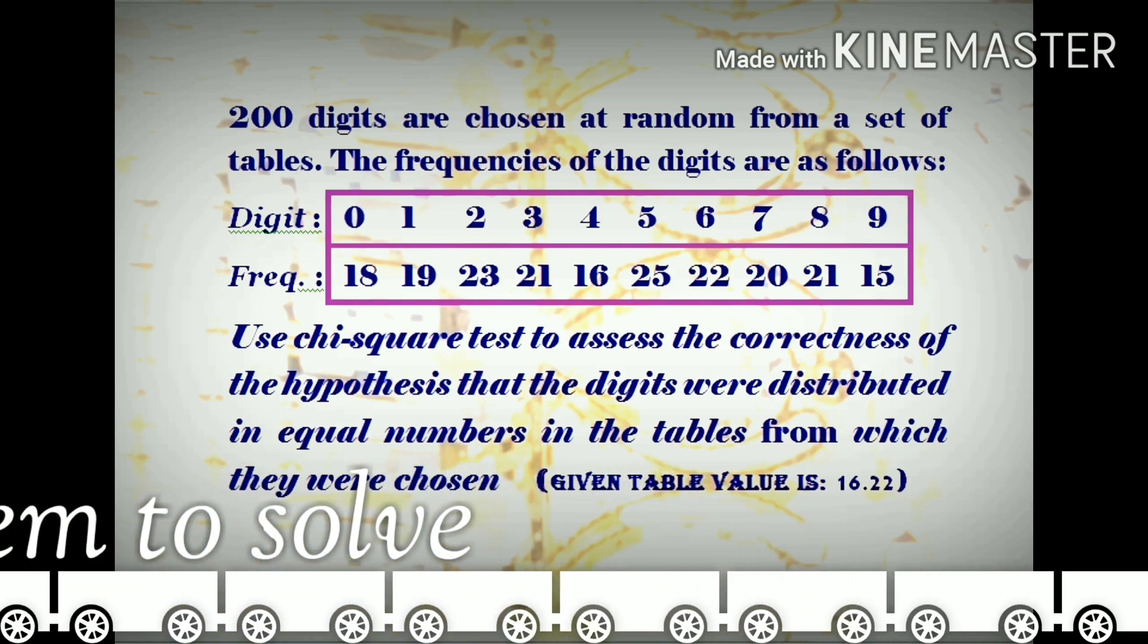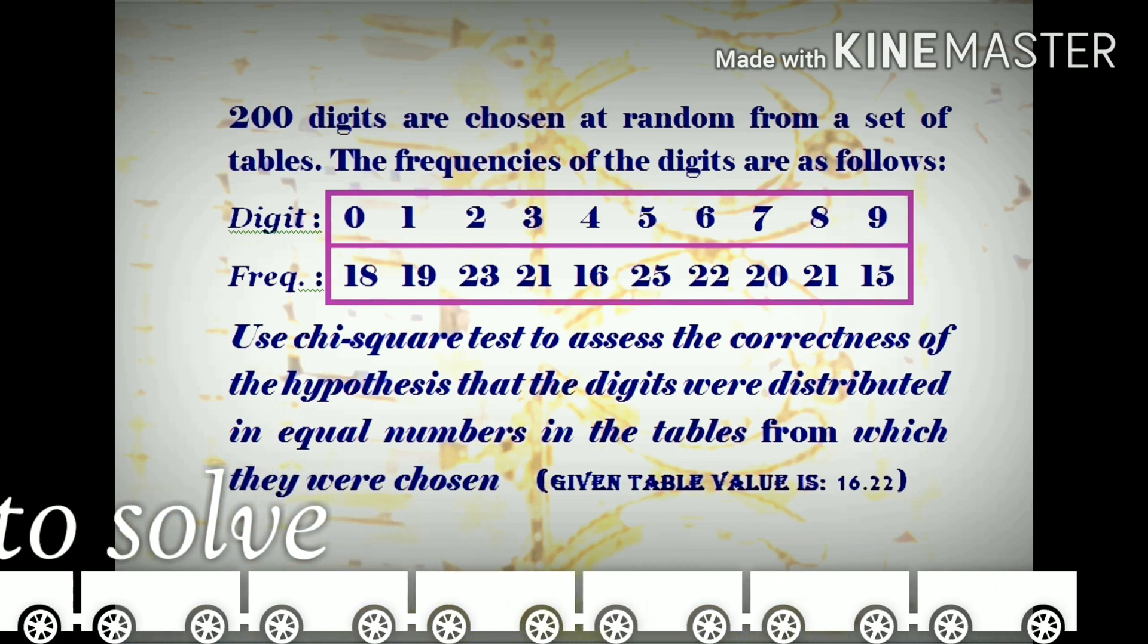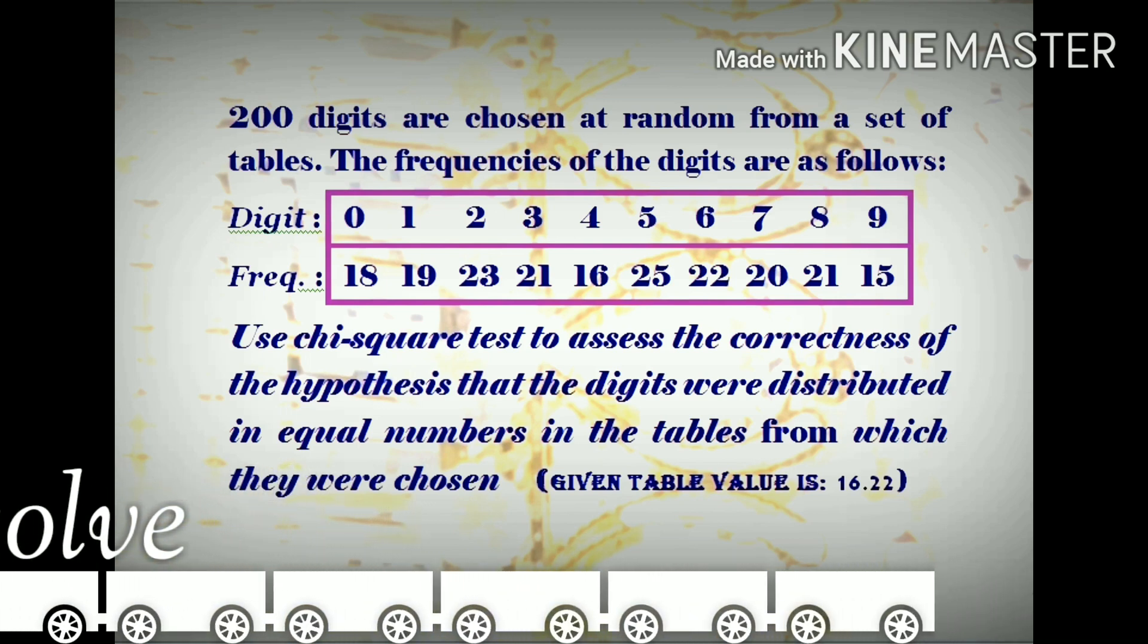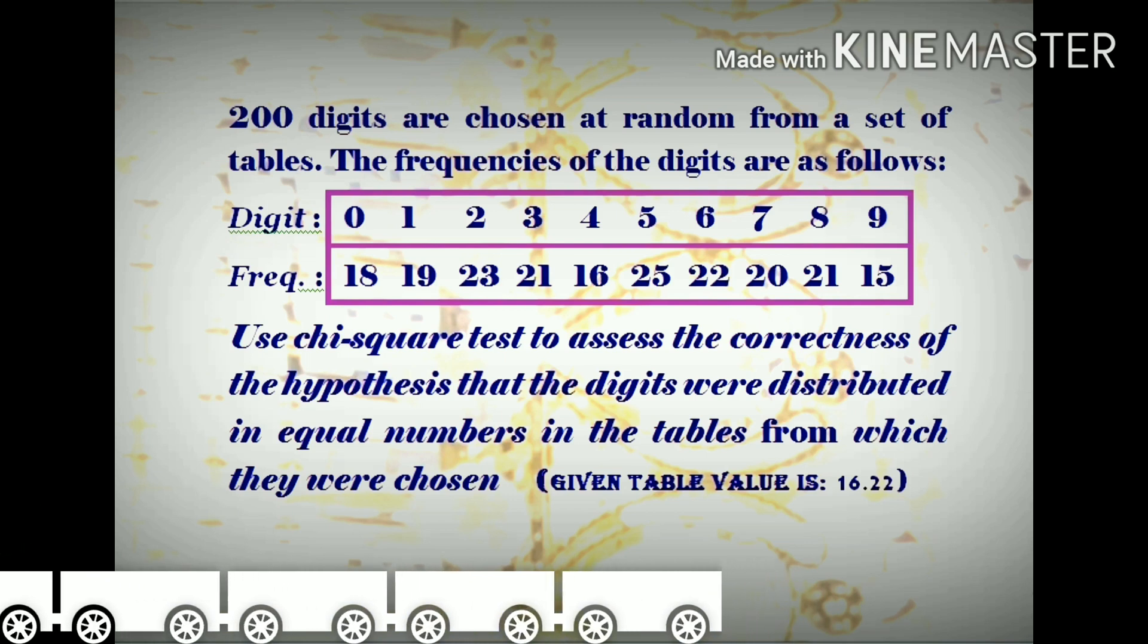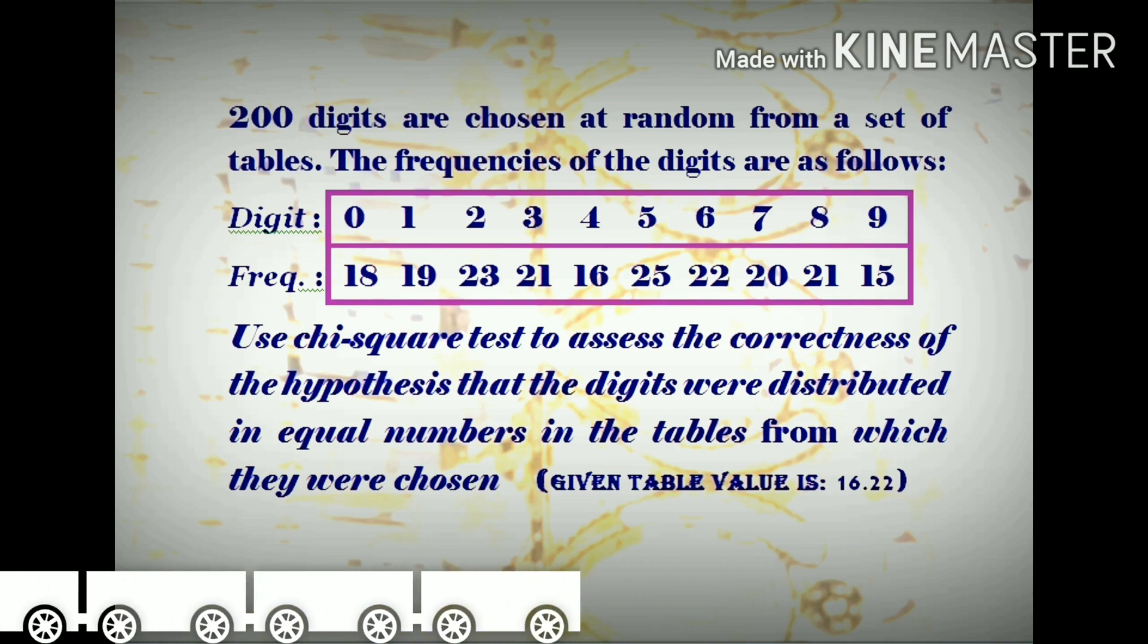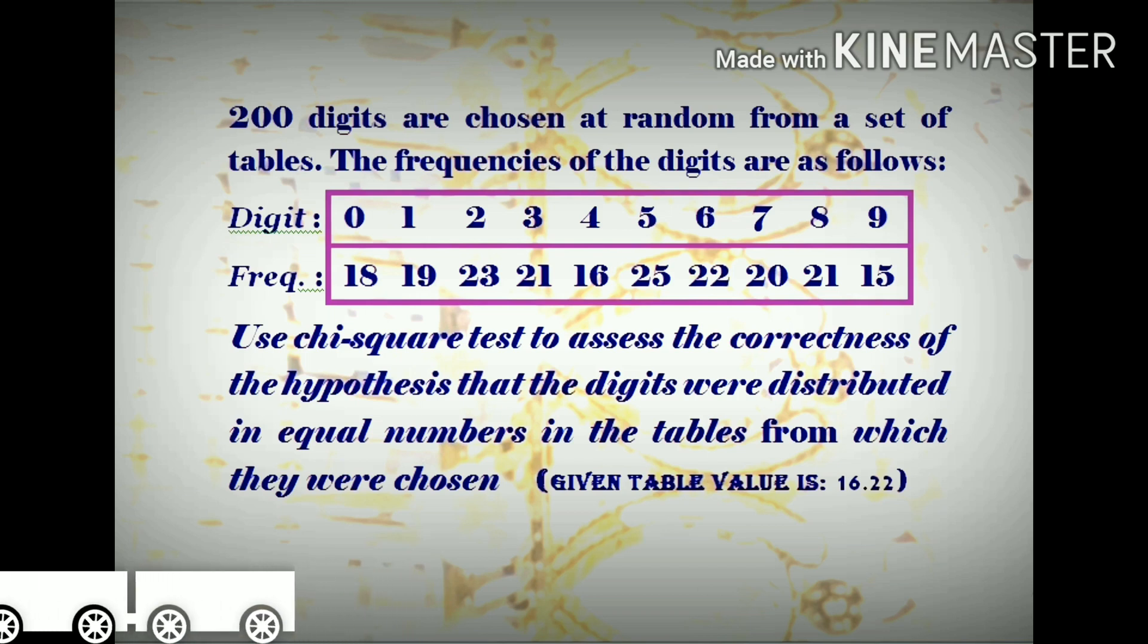Use chi-square test to assess the correctness of the hypothesis that the digits were distributed in equal numbers in the table from which they were chosen. Given table value is 16.22.